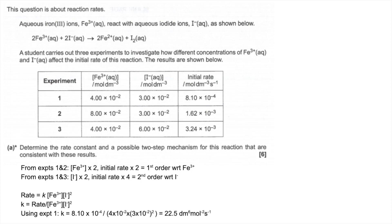To explain the units for k: the rate unit goes on top and all the concentration units go on the bottom. Cancel what you can, then take the denominator up to the top by flipping the sign of the powers — that gives dm⁶ mol⁻² s⁻¹. If you wrote mol⁻² dm⁶ s⁻¹ that's fine, but conventionally we write positive powers first.